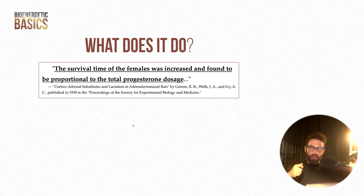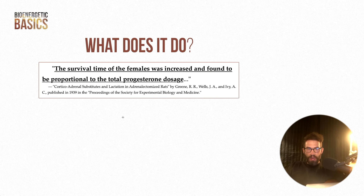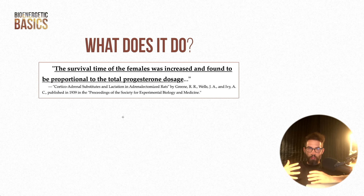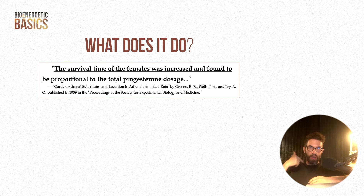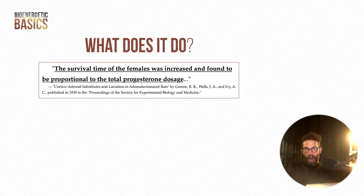I'm a long way from fully understanding progesterone, but the first time I made headway was when Ray referenced a paper from 1939. The gist is they adrenalectomized rats — removed their adrenal glands — and those rats could live as long as they were dosed with progesterone. It shows how progesterone is a buffer from stress; you don't need your classical stress systems if you have enough progesterone. Without progesterone, these rats would die immediately when exposed to stress, but with enough, they could live indefinitely.